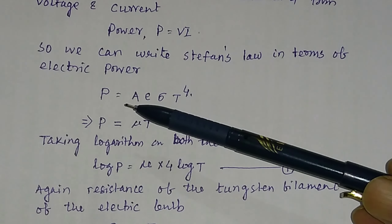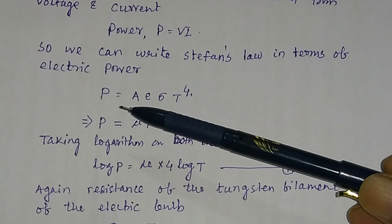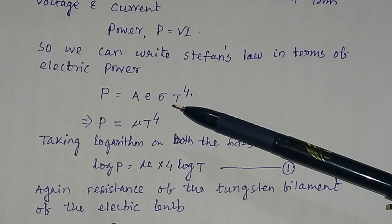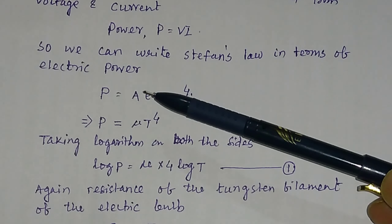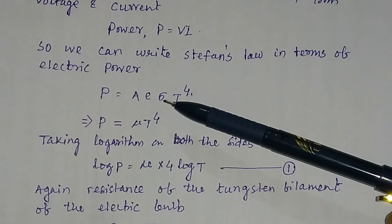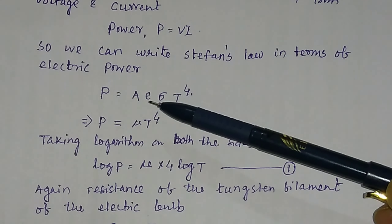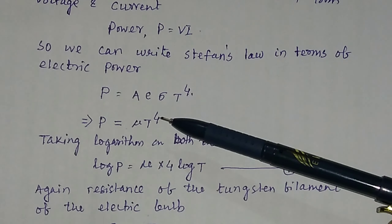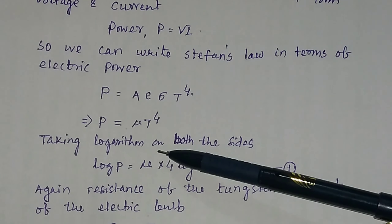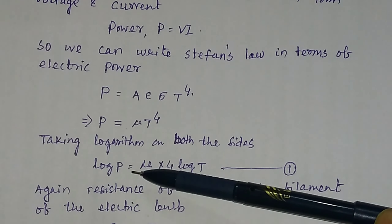So, you first switch on the circuit, then you increase the voltage. When you increase the voltage, the bulb will glow — the DC bulb. When you increase the voltage, I am increasing the voltage.